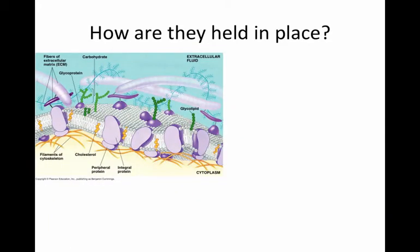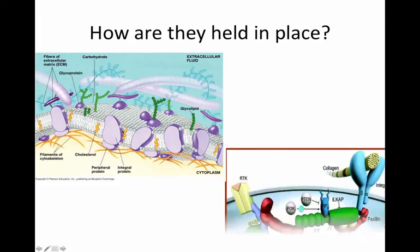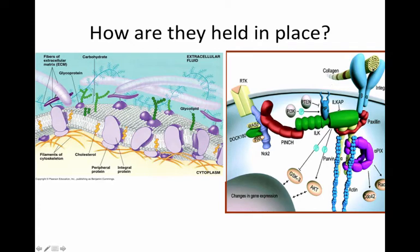How are these proteins held in place? This builds on what we've learned in previous chapters. You can see how they're held in place by various extracellular matrix proteins. You see collagen here — that's an extracellular matrix protein — and you see integrins here as well.